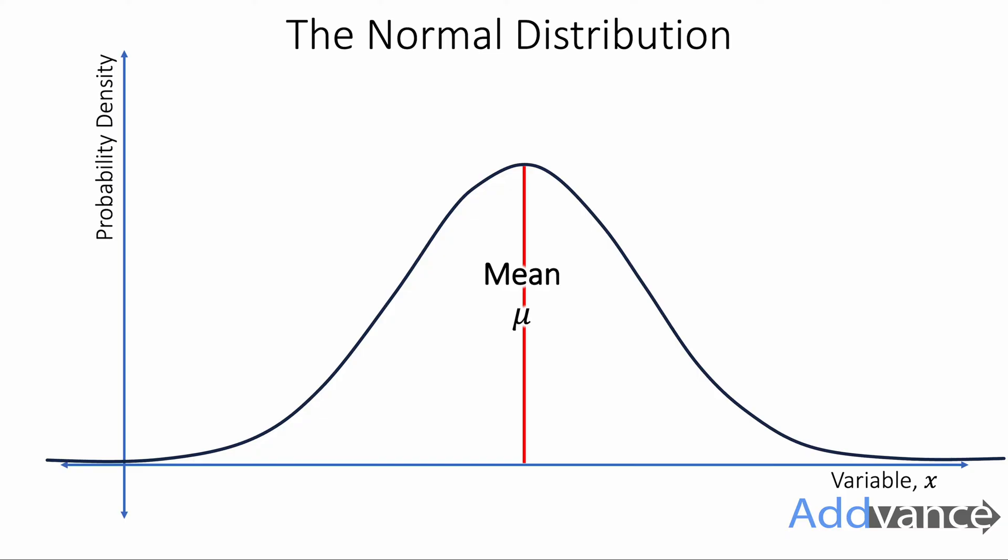On the y-axis we have the probability density and on the x-axis we have the variable, whatever that may be. And what you'll find is that a lot of statistics in the real world fit this general shape.